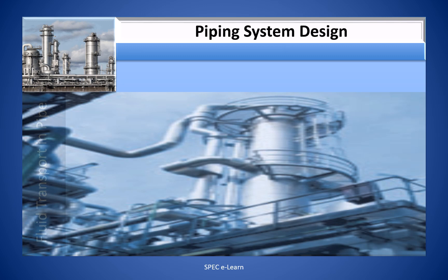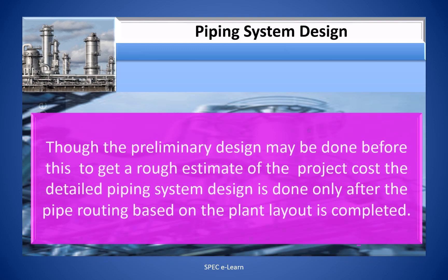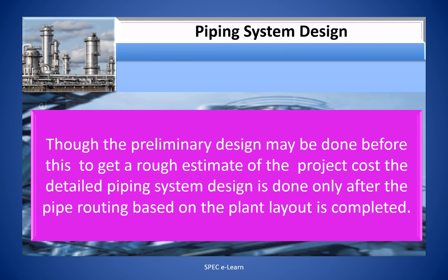Piping system design is the last and final lap in the series of process design activities before the process engineer completes the process design package for a chemical process plant. Though the preliminary design may be done before this to get a rough estimate of the project cost, the detailed piping system design is done only after the pipe routing based on the planned layout is completed.